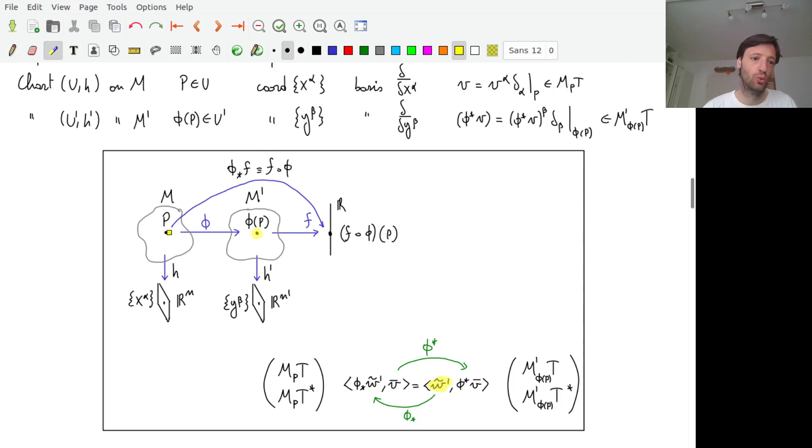To the dual tangent space of the manifold M, which is this one. So we are using the push forward to go from v to phi star of v, and we are using the pullback to go from the one-form w to the pullback of w.